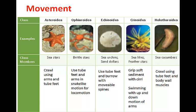The structure of the endoskeleton is important for determining the type of movement an echinoderm can undertake. Sea stars crawl using their arms and tube feet. Brittle stars use their tube feet and arms in a snake-like motion. Sea urchins use their tube feet to burrow. Sea lilies grip soft sediment with their cirri and can swim with up-and-down motion of their arms. Sea cucumbers crawl using tube feet and body wall muscles.